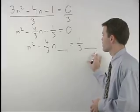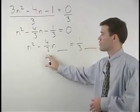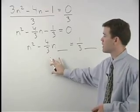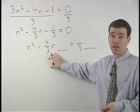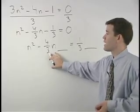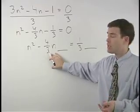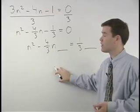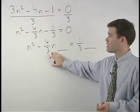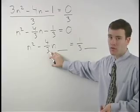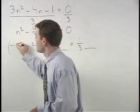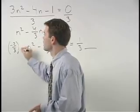The number that goes in each of these spaces comes from half the coefficient of the middle term squared. What is half of negative 4 thirds? When taking half of a fraction, the easiest way to do it is to simply take half of the numerator. In other words, half of negative 4 thirds is simply negative 2 thirds.